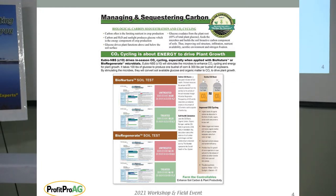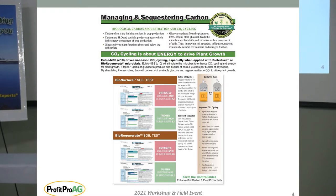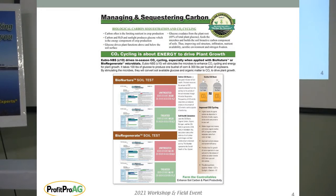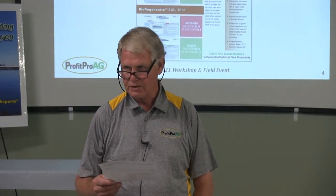Remember, it takes 100 pounds of glucose to produce one bushel of corn and 300 pounds to produce one bushel of soybeans. Glucose drives all the plant functions above and below ground. The plant exudates 40 percent of the glucose into the soil to feed the microbes and build soil and build bioactive carbon, thus improving soil structure, infiltration, nutrient availability and retention, aerobic environment, and improvement in nitrogen fixation.